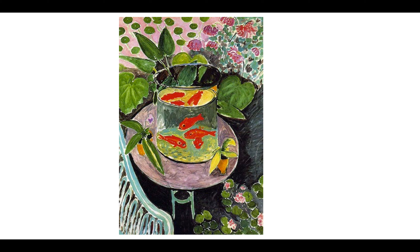We'll talk a little bit more about the color scheme that Matisse is using. This particular painting belongs to a series that Matisse produced between the spring and summer of 1912, but this specific one focuses on the fish. The whole theme for this particular piece is aiming for a painting to calm and soothe the viewer.